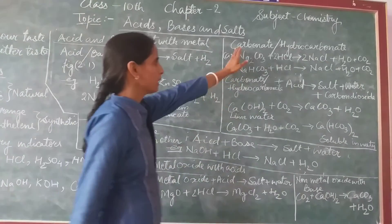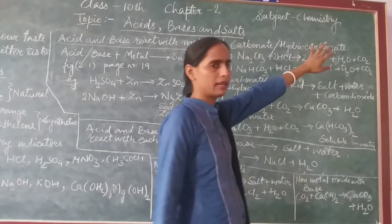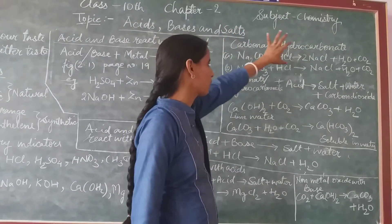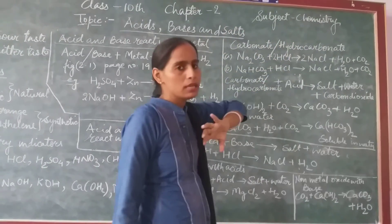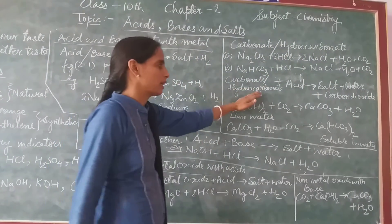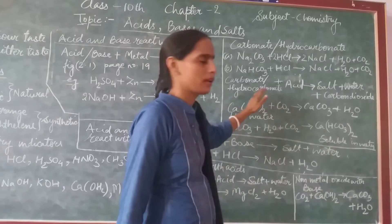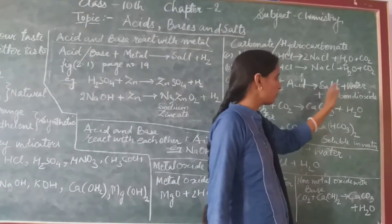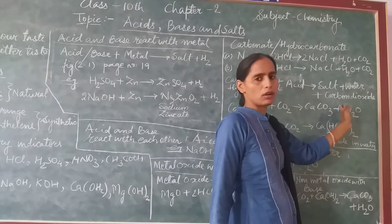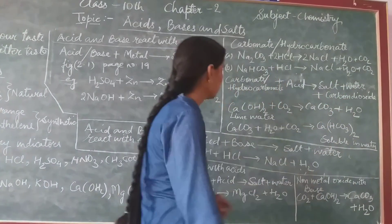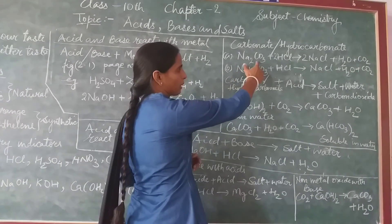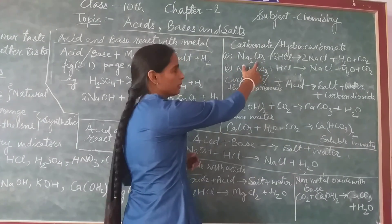Now let's talk about carbonate and hydrocarbonate. Metal carbonates and hydrocarbonates, when they react with acid, give salt plus water plus carbon dioxide. For example, sodium carbonate reacts with acid to produce these products.